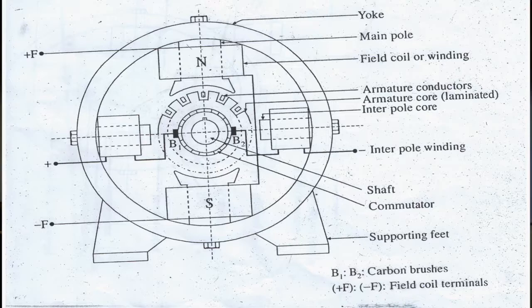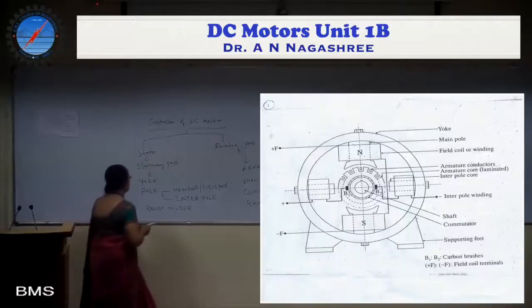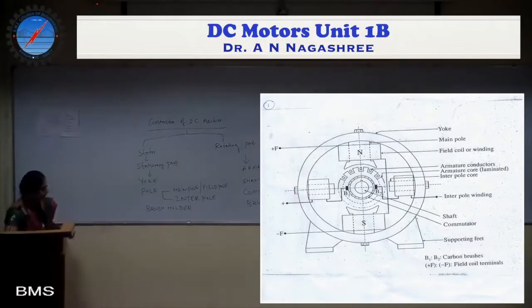As you can see here, the outer one is the yoke, then it has the main field poles, then the armature, and then the commutator inside it, which is segmented. Finally, it has the brushes. All these are placed on the supporting feet. Now let us take the function of each part one by one.